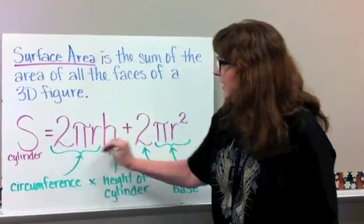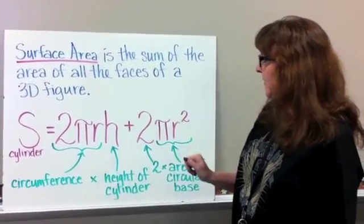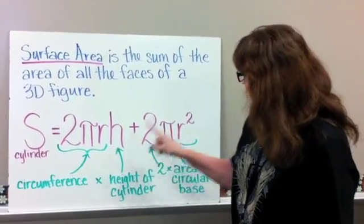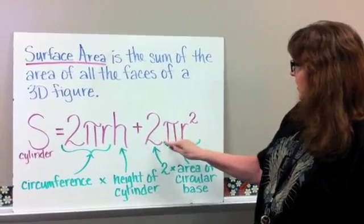which is actually your circumference here of that circle. So you can find the middle of that rectangle. And your two circles here, plus 2πr².